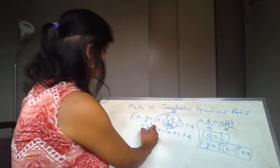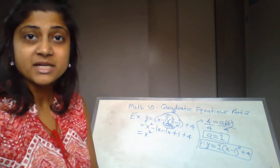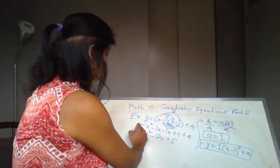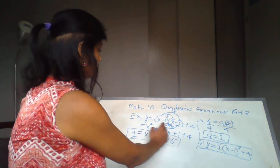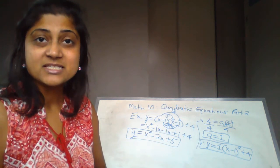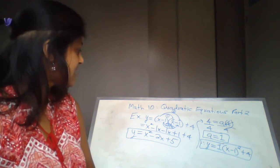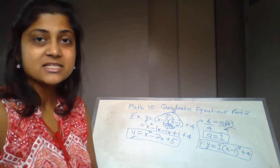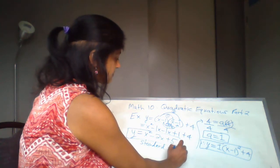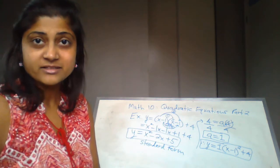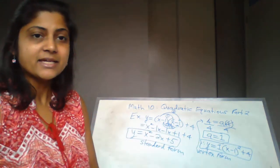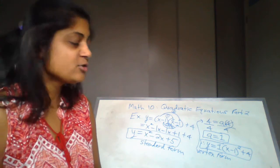Continuing the FOIL: negative 1 times x gives negative 1x, and negative 1 times negative 1 gives positive 1. I also have positive 4 outside. Combining like terms: x² minus 1x minus 1x gives minus 2x, and 1 + 4 = 5. So the standard form is y = x² - 2x + 5.